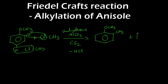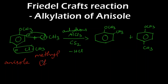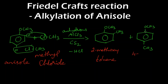In the ortho product, OCH3 is on anisole and a methyl group is attached at the ortho position. In the para product, a methyl group is attached at the para position. The ortho compound is named 2-methoxy toluene (second position methoxy attached), and the para compound is named 4-methoxy toluene (methoxy attached at the fourth carbon).